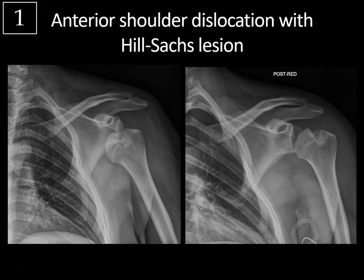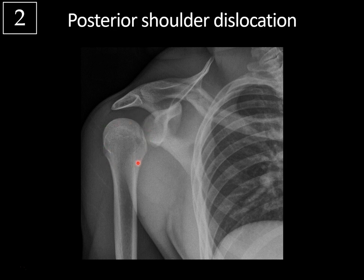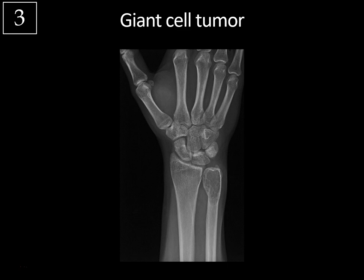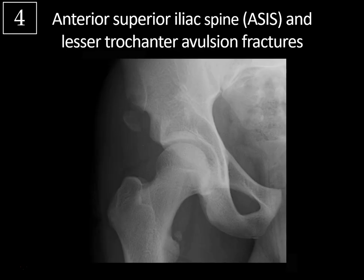Rapid review: Case 1 — anterior shoulder dislocation with Hill-Sachs lesion. The humeral head will be anterior and inferior to the glenoid. The Hill-Sachs lesion occurs along the posterior superior lateral humeral head due to impaction against the anterior inferior glenoid. Case 2 — posterior shoulder dislocation: look for fixed internal rotation giving the lightbulb sign, loss of the normal half-moon overlap, the rim sign with increased glenohumeral joint space due to lateral humeral head displacement, and the possible vertical trough line sign. Case 3 — giant cell tumor: subarticular expansile lytic lesions, most commonly about the knee then radius, in patients with closed growth plates, majority benign.